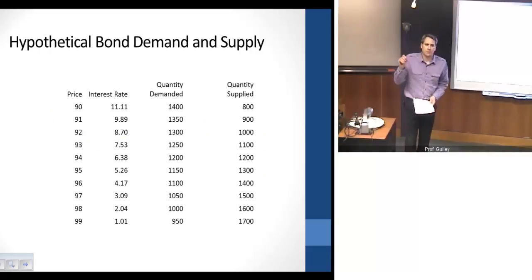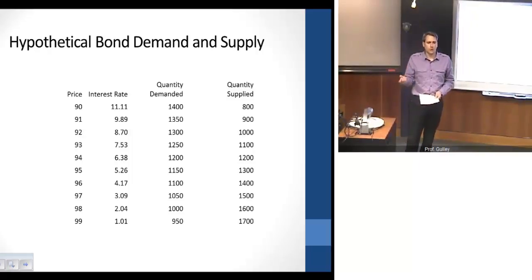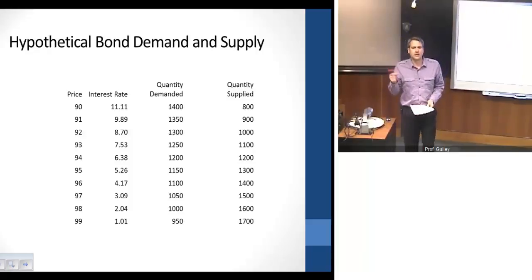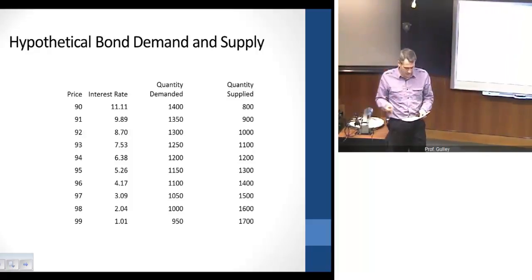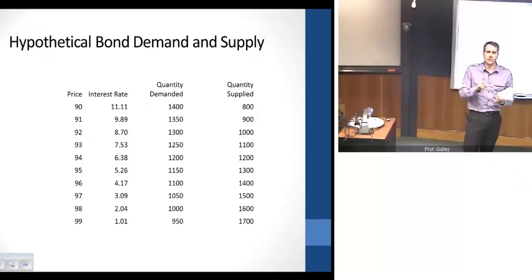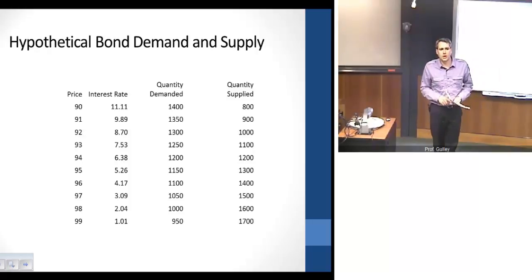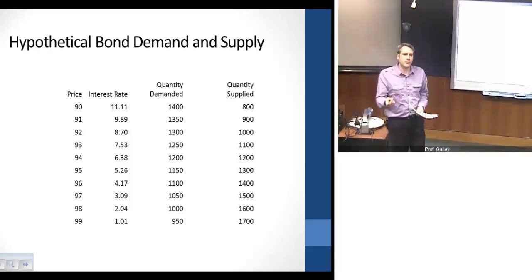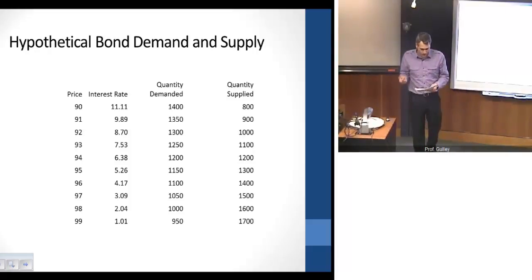Like every market, you have a supply side and a demand side. On the demand side, the idea is that you have people who wish to hold bonds for various reasons. The demanders are investors who want to hold those bonds to earn a return or a premium. The expected return to bondholders is essentially equivalent to the interest rate as it's related to the yield to maturity. The fundamental part of this story is that the price of a bond and the yield — or the interest rate — are going to be inversely related.